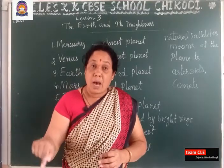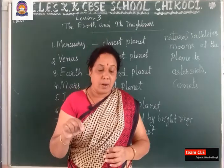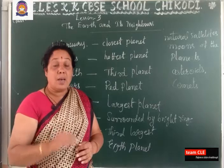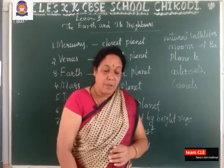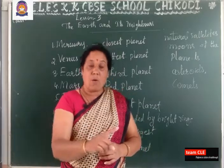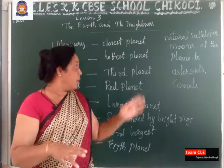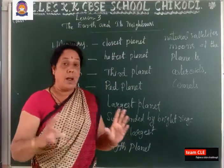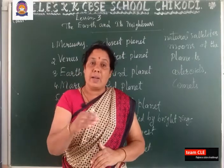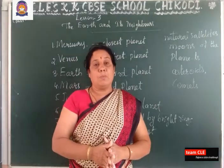The moon moves around our planet Earth. Like the Earth, many other planets also have natural satellites or moons revolving around them. Those other planets are also having their own natural satellites or moons, revolving around each planet.